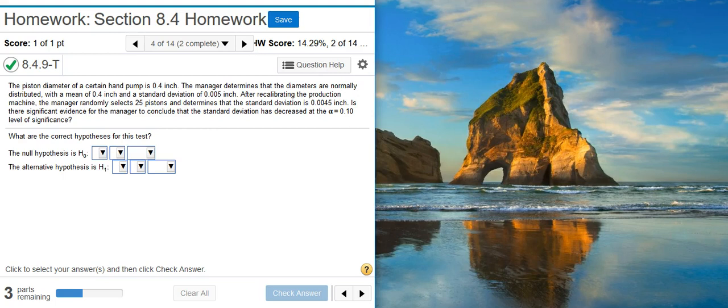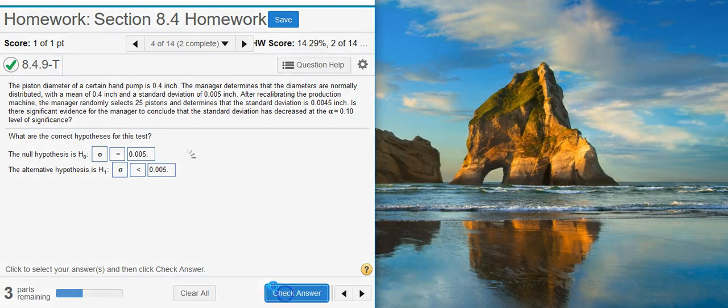The first part of our problem asks us to determine the correct hypotheses for this test. We're looking at a test on standard deviation, so we want to select population standard deviation as our parameter. The null hypothesis is always a statement of equality. And then the question becomes, what value do we put here? Typically, this is the claimed value, and the claim that we're making is, do we have enough evidence to conclude that there's a decrease in the diameter? So if we're looking for a decrease in the diameter, the value that we want to put here is the standard diameter that we're measuring against, not the sample that we're looking at, but for the population. The standard belongs with the population. So that's the one that we want to select. Then, the claim is that we're looking at a decrease from that value. Good job!